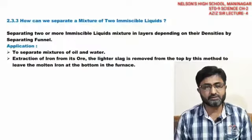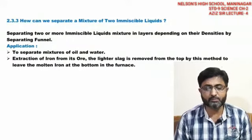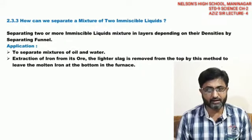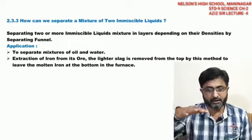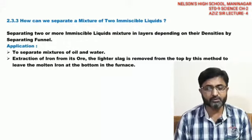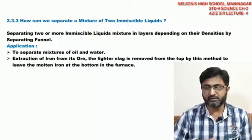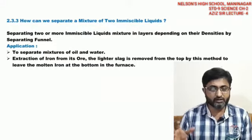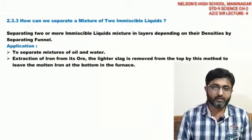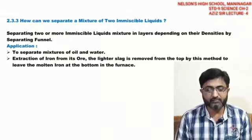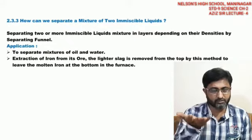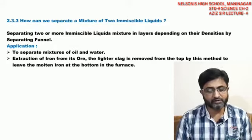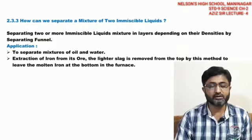This technique is used in many applications — to separate oil and water, and in extraction of iron ore, because in iron ore the slag is a lighter material which goes upward. At that point, iron and slag are two immiscible liquids. Slag — which is calcium silicate, a mixture of silicon and calcium — is lighter than iron and goes to the upper side, while iron, being heavier, settles down. In the furnace, these two can be separated by this method.